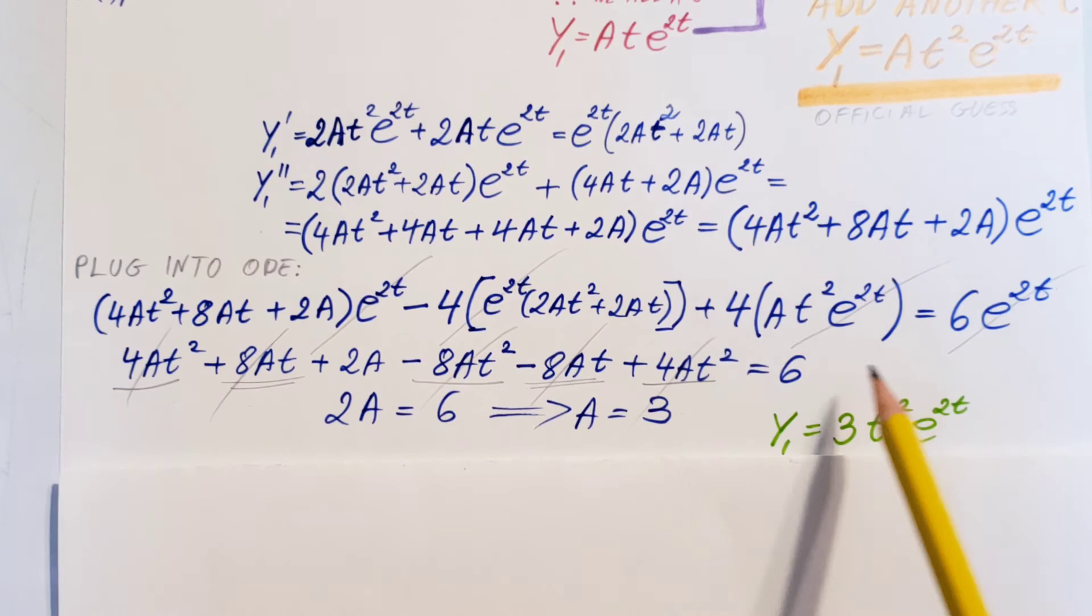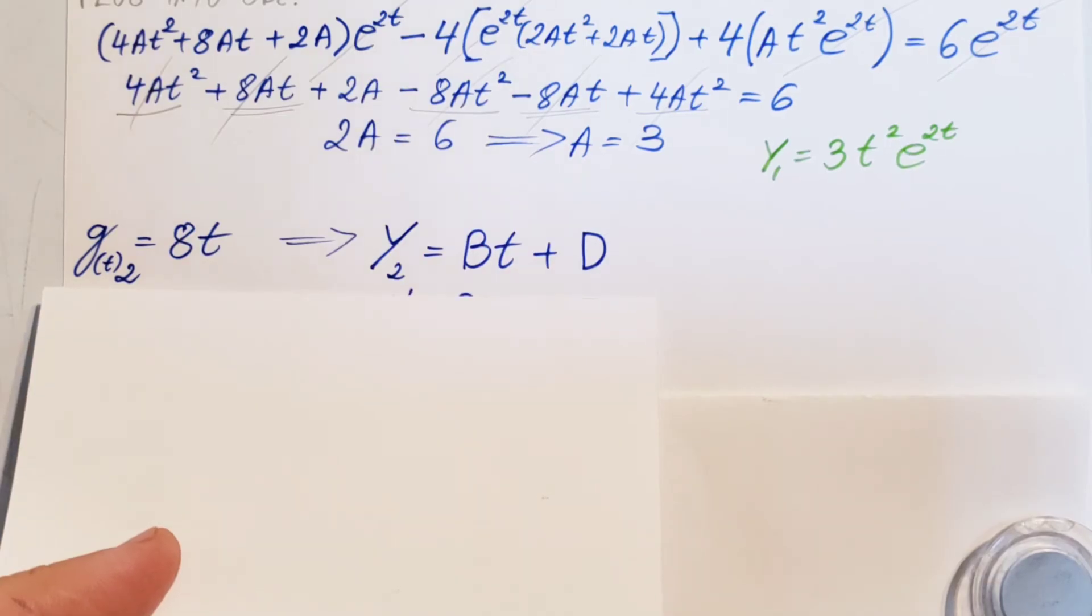For this, we have our first particular solution, which is 3t squared e to the 2t. All I did, take A and plug it back into my official guess. And there it is. Now, we are done with one of the terms, now we have to work on the other term, the 8t.